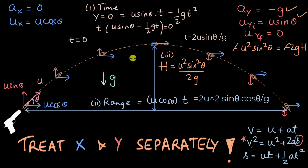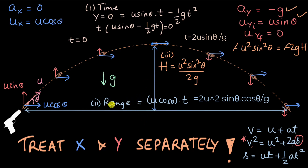To fully describe a projectile motion, all we need to know is the velocity and the angle at which the object was fired. We can then find the time, maximum height, and range. Maximum height and time are determined by the vertical part of the motion; range is determined by the horizontal part.